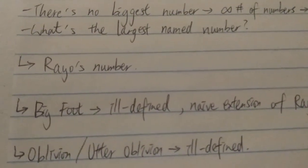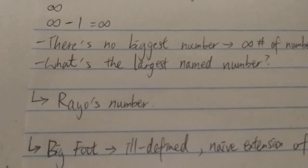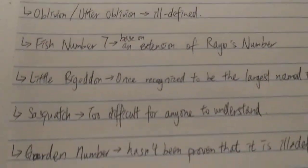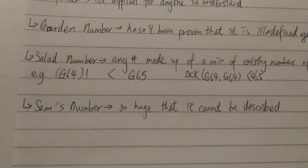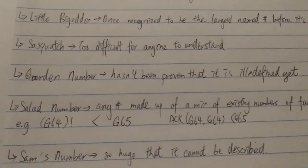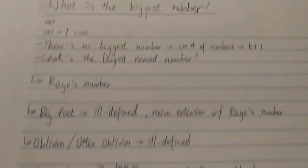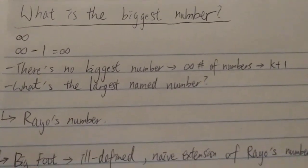You can still say it's the biggest named number, but it's up to you. And again, any people can make up a biggest named number, but you cannot use Naive Extension. You cannot just say Rayo's number plus one. So anyway, thanks for watching and have a nice day.